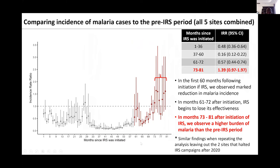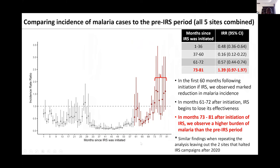The x-axis is months since IRS was initiated. The y-axis shows incidence rate ratios. In the first five years, we observed significant reductions in malaria burden across all sites. Then in the sixth year, we begin to see a loss of effectiveness of IRS — not large, but a loss of effectiveness. Then in the last year, corresponding to the 73rd to 81st month, we see a significant increase in malaria incidence compared to baseline across the five sites.